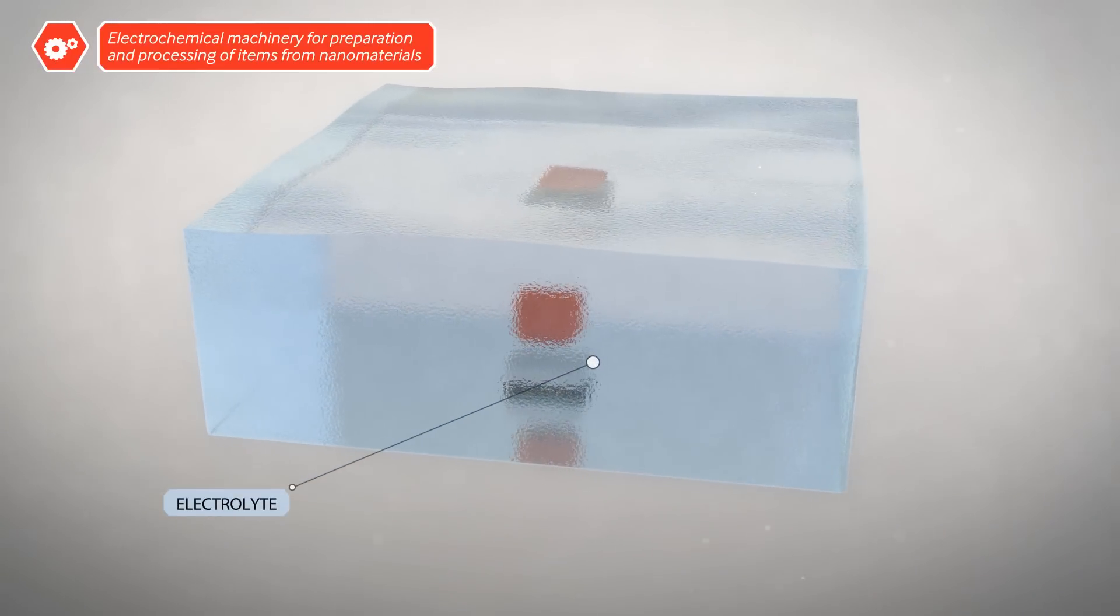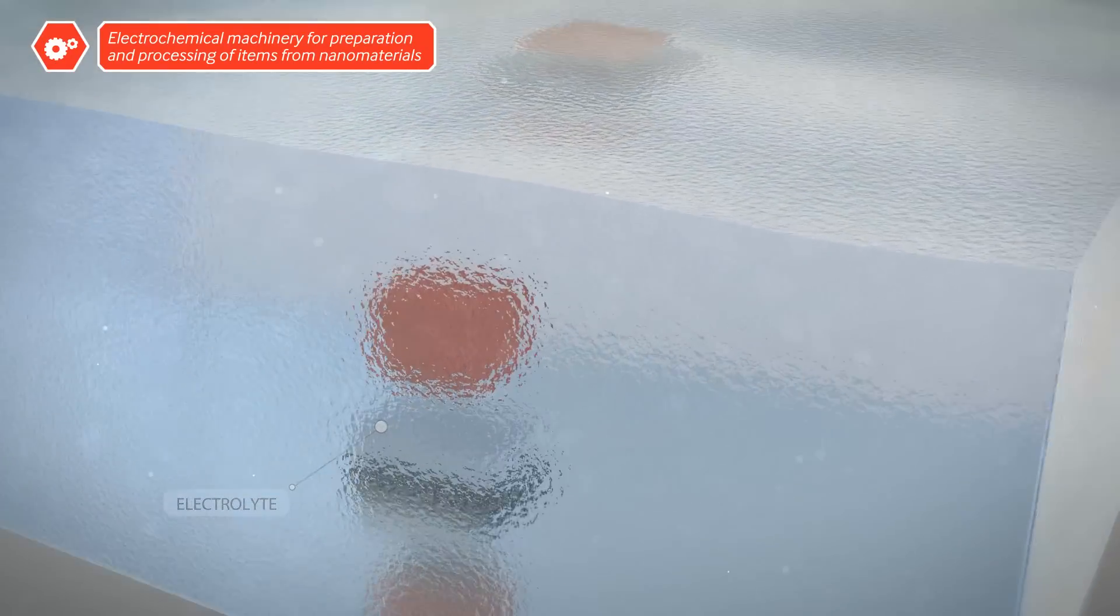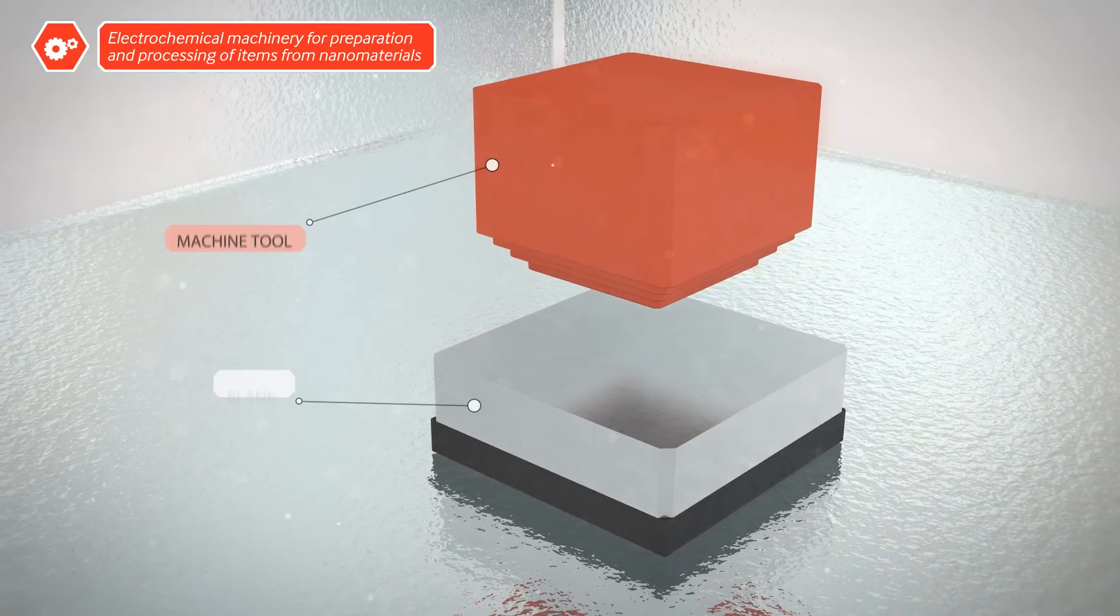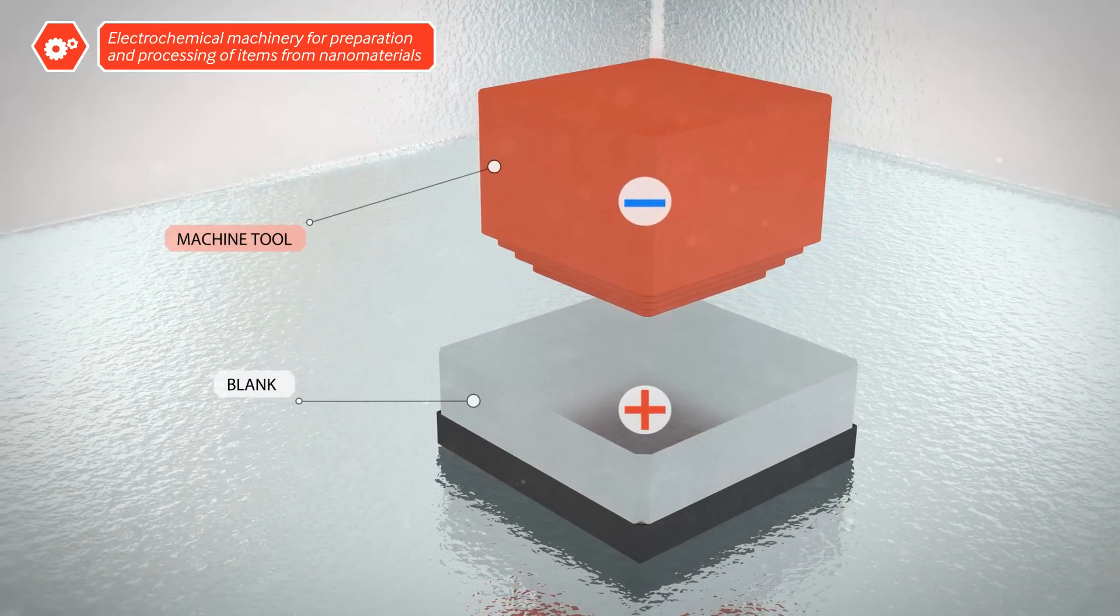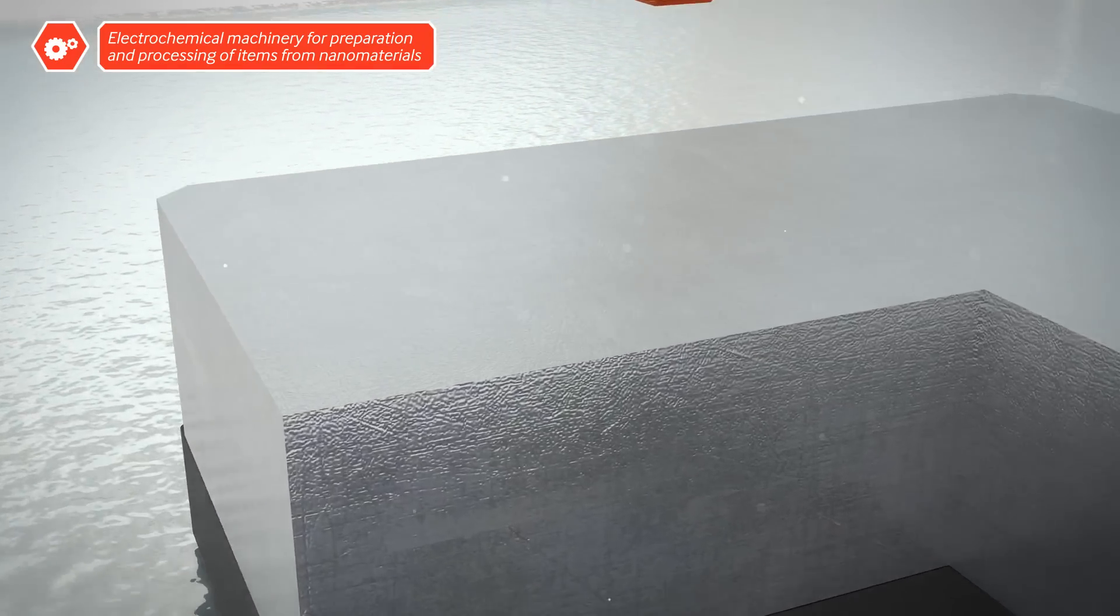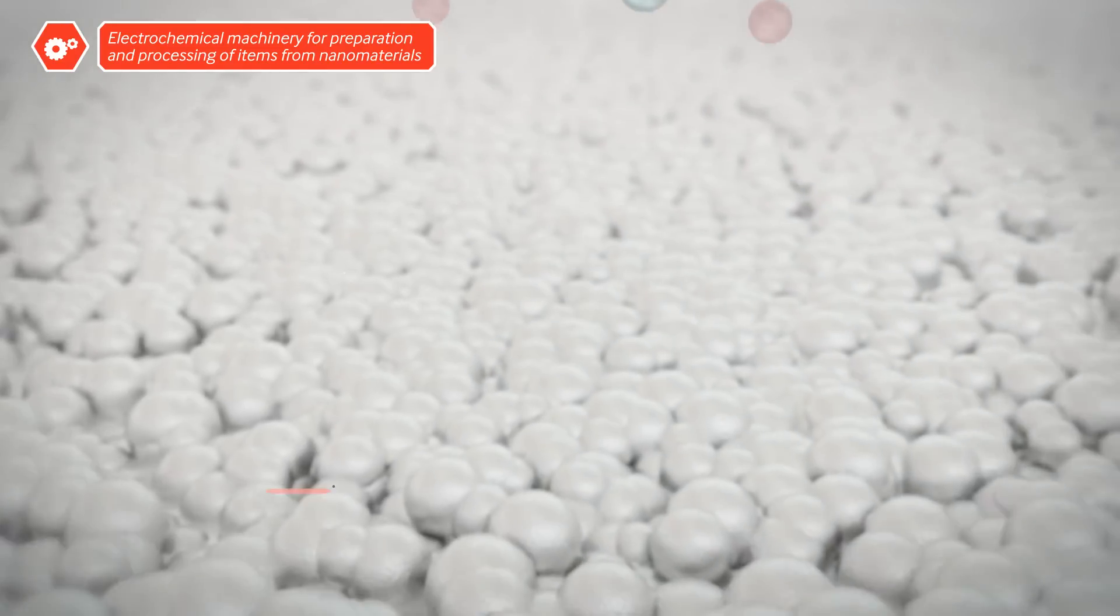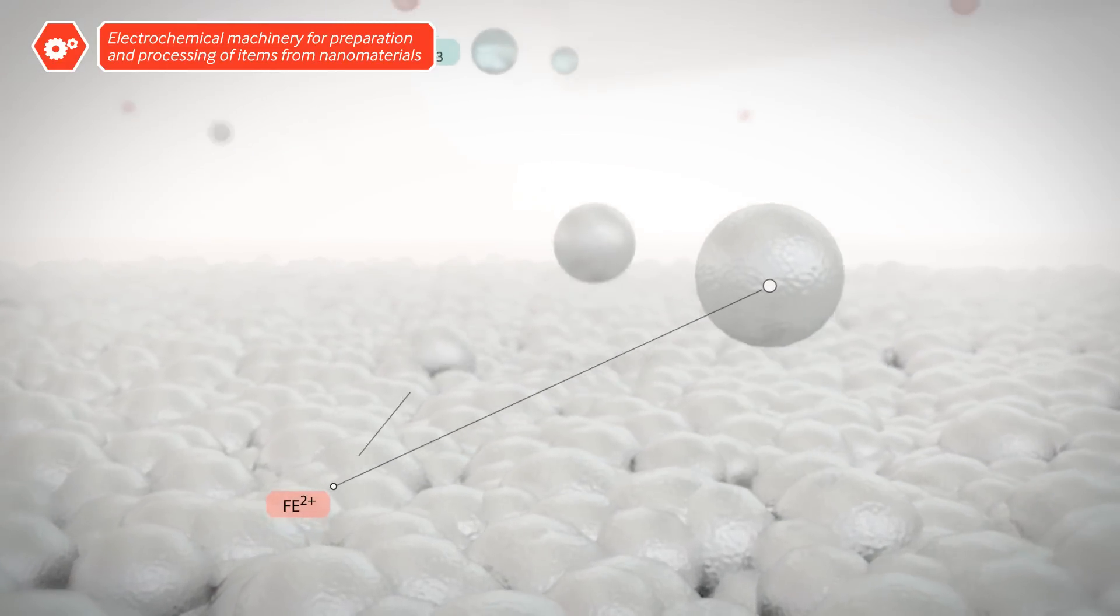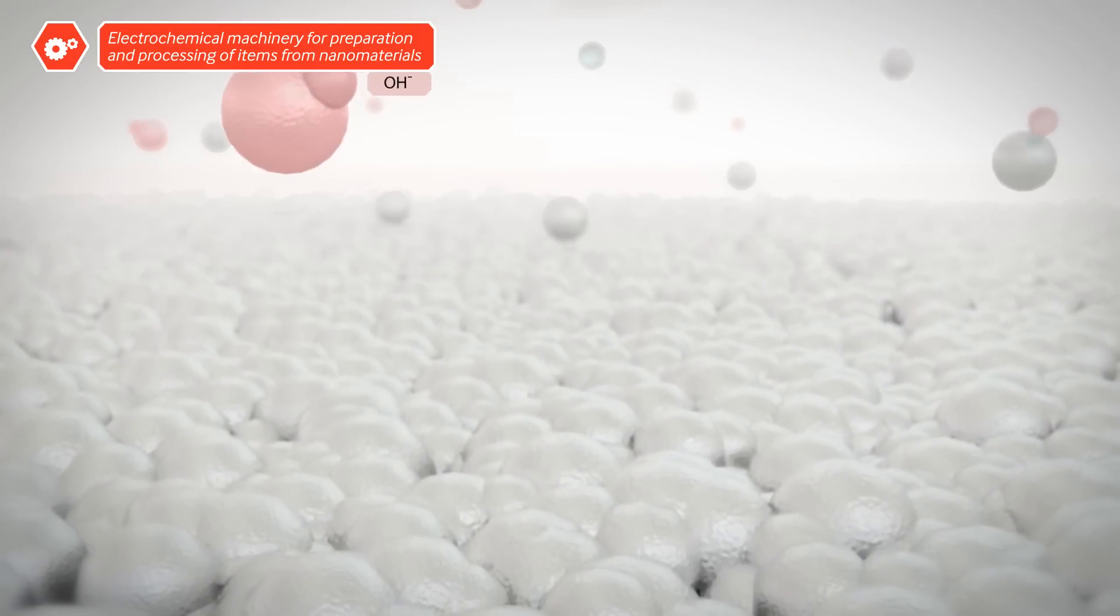The mechanism for processing is based on electrolysis. The blank is converted to the positive pole. The machine tool is connected to the negative pole. A neutral saline solution is used as the electrolyte. Voltage is delivered. The electrochemical reaction begins.